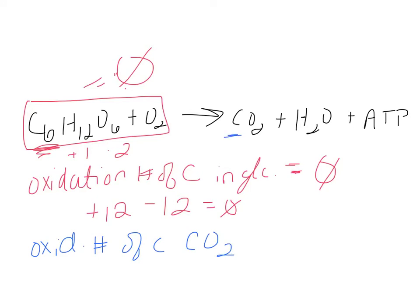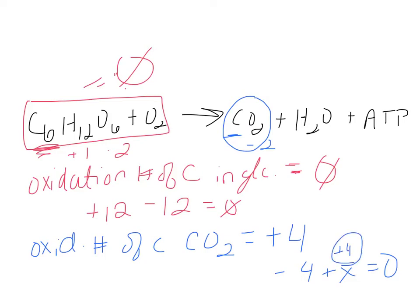In the process of rearranging glucose into pyruvate molecules, we release some ATP and some NADH. This process also requires an input of ATP — it's not a spontaneous reaction; it's an endergonic reaction. It requires an input of energy to start, and then it also releases some energy.